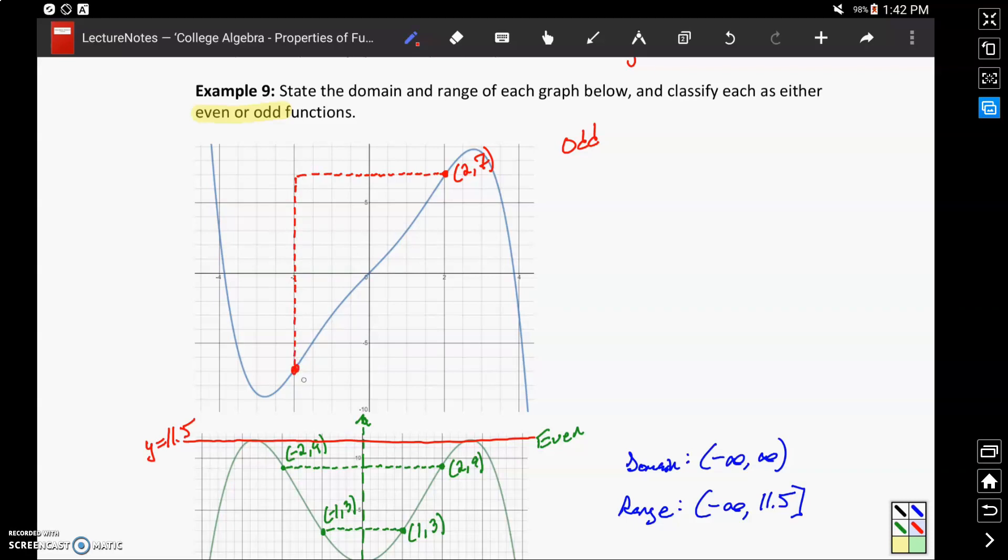So that double reflection, or that two-step reflection, leads us to the point negative 2, negative 7. And we can continue to identify that same pattern. For instance, with the point 1 comma 3.